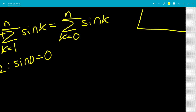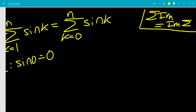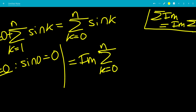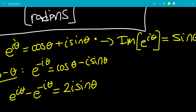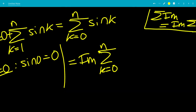We also know the sum of imaginary parts equals the imaginary part of a summation, since the summation is over natural numbers. So this equals the imaginary part of the sum from k equals 0 to n. Sine of k equals the imaginary part of e to the ik, plugging in k for theta.